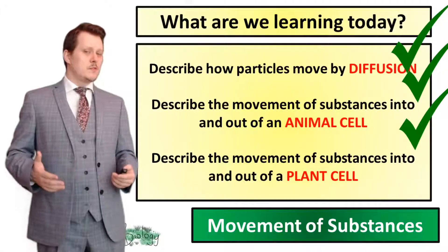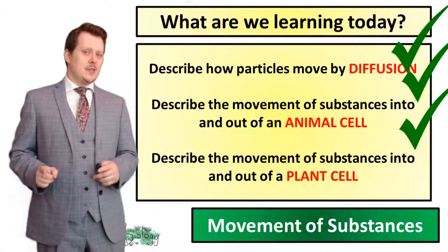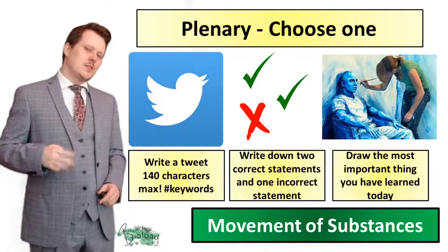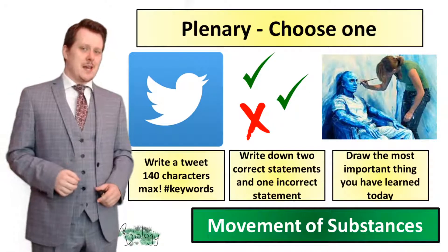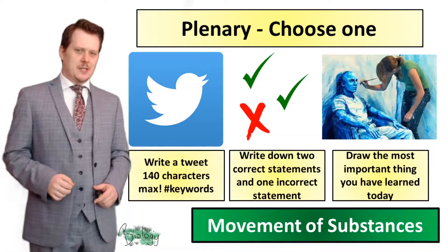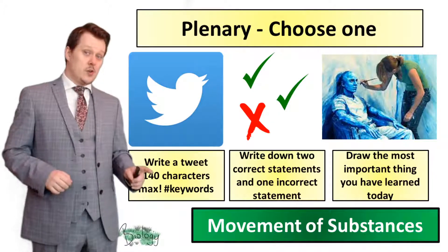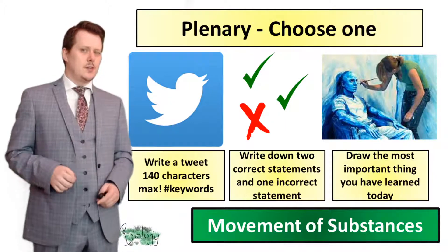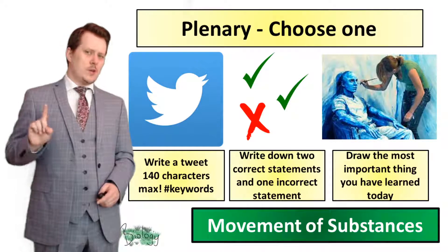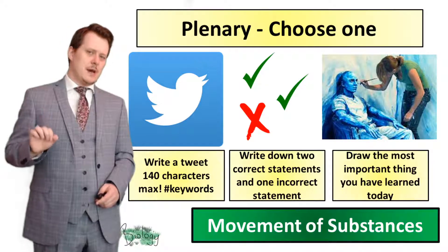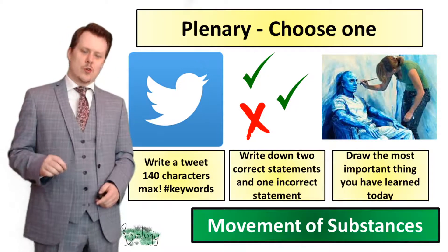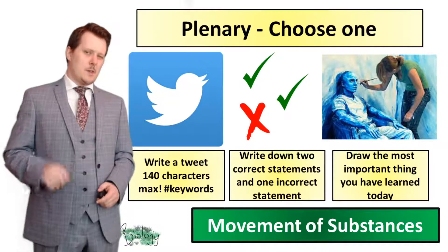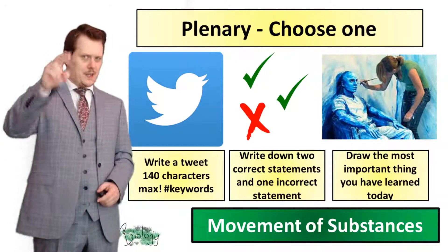So now we have described the movement of substances into and out of a plant cell. There's only one more thing to do before we wrap up — choose which tag to complete. You can either write a tweet of 140 characters and hashtag the key words, write two correct statements and one incorrect statement about today's lesson, or draw the most important thing you learned today. I hope you've had a great lesson, and I'll see you next time.